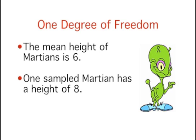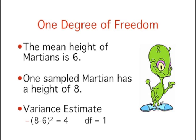As an example, let's say that we know that the mean height of Martians is 6 and wish to estimate the variance of the heights. To estimate the variance, we randomly sample one Martian and find that its height is 8. Recall that the variance is defined as the mean squared deviation of the values from their population mean. We can compute the squared deviation of our value of 8 from the population mean of 6 to find a single squared deviation from the mean. This single squared deviation from the mean is an estimate of the mean squared deviation for all Martians. Therefore, based on this sample of 1, we would estimate that the population variance is 4. This estimate is based on a single piece of information and therefore has 1 degree of freedom.